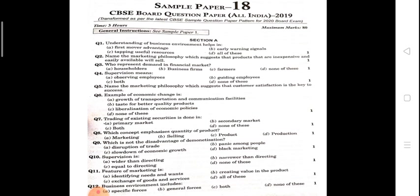The first objective type question is: understanding of business environment helps in what? The options are: first mover advantage, early warning signals, tapping useful resources, and all of these. If we study business environment, we get all the information — we take a first mover advantage, it helps in getting early warning signals, and also in tapping useful resources. So the answer is all of these.